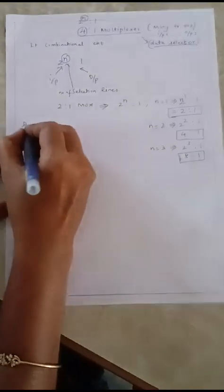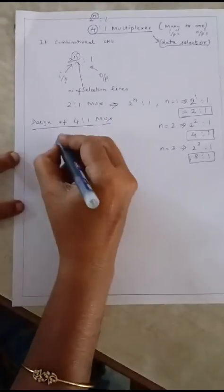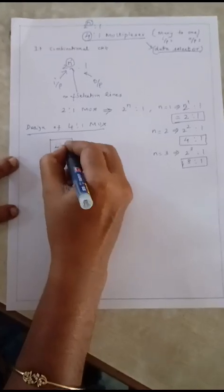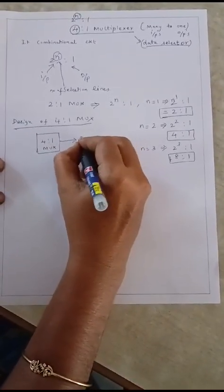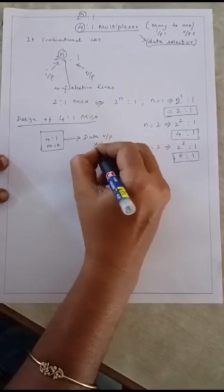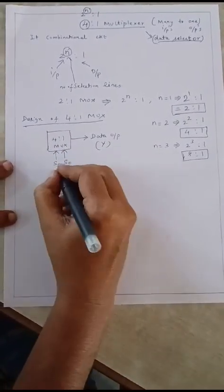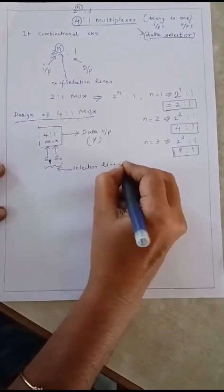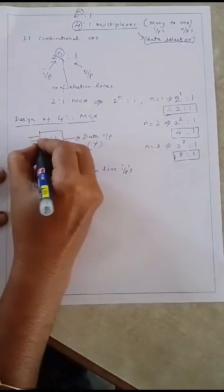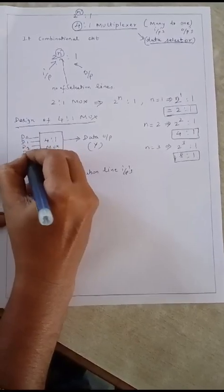Now I will design the 4-to-1 multiplexer by drawing its logic symbol. The 4-to-1 MUX produces only one output, named the data output and represented by the variable Y. It takes 4 inputs and 2 selection lines. The selection lines are S0 and S1, and the four data inputs are labeled D0, D1, D2, and D3.